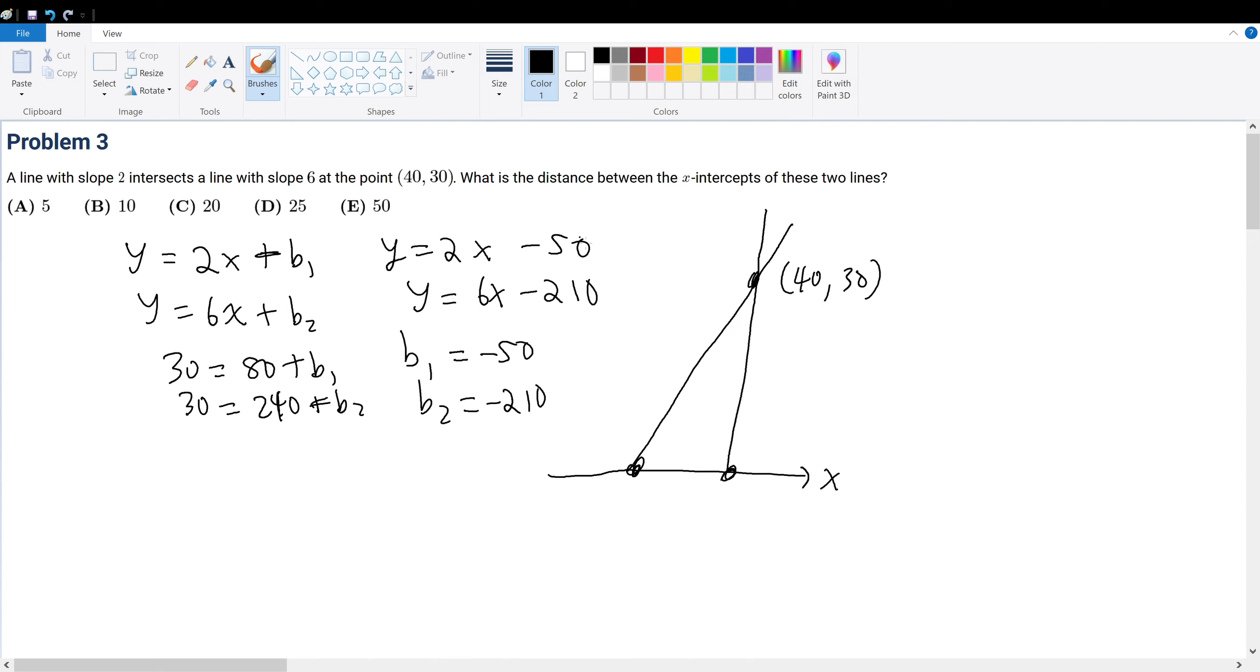So, what is the x-intercept for this line? Well, the x-intercept is defined as (x, 0). So that means y must be 0 for an x-intercept to happen. So, 0 = 2x - 50. So that means x = 25. So that means it intersects the x-axis at (25, 0).